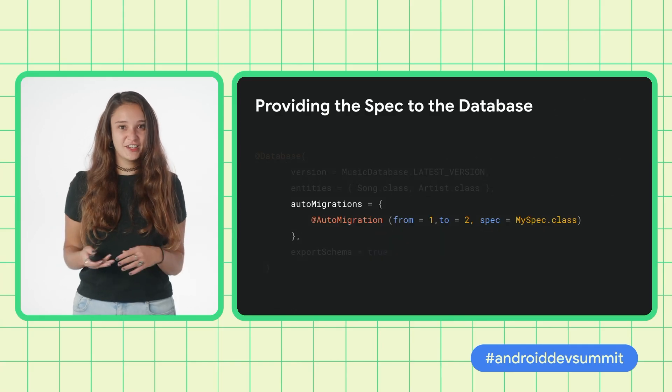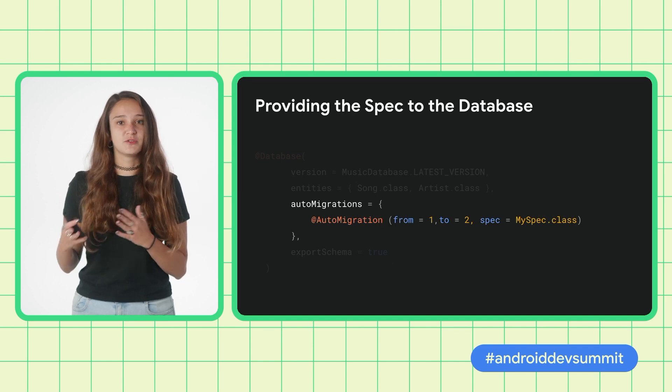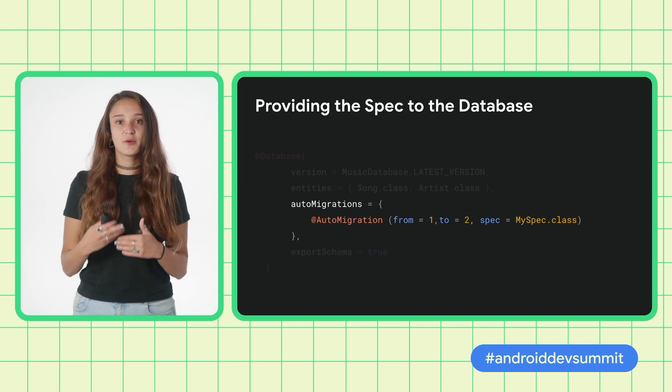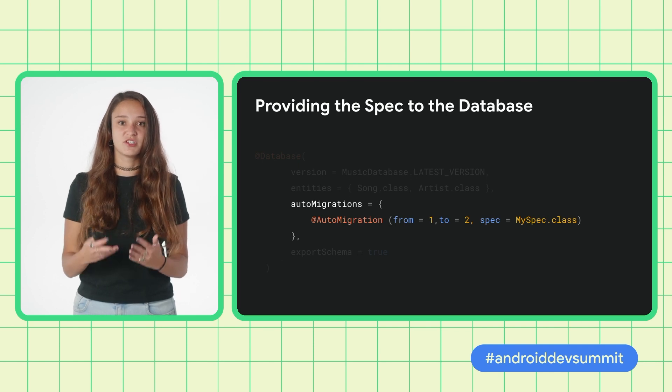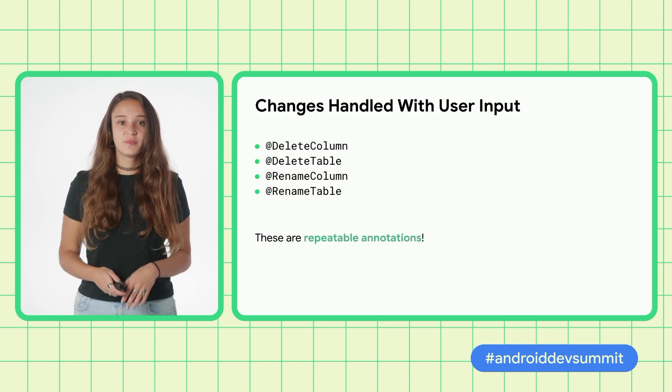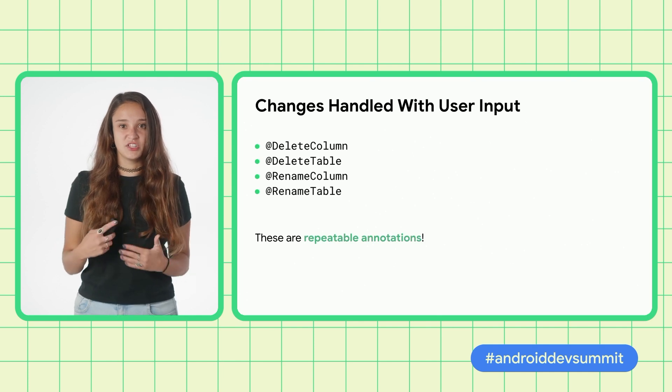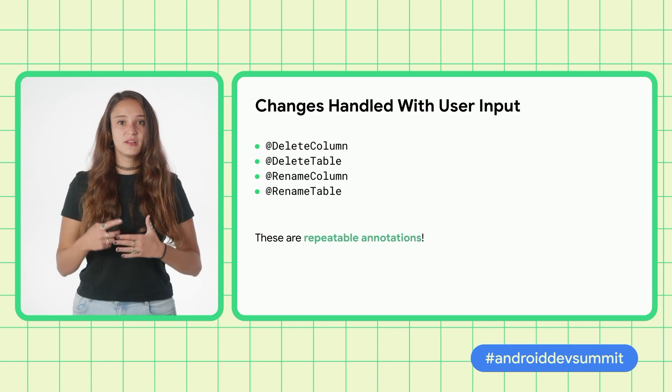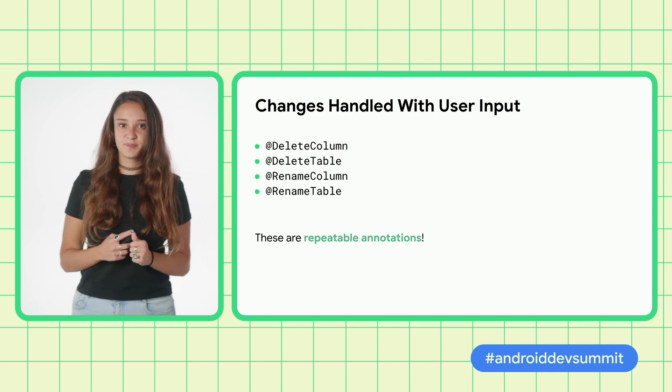Once again, with the two schemas of the versions you want to migrate between provided, the auto migration API will handle the rest by generating and implementing the migrate function for you. Going back to the ambiguous change scenarios that require user input, these are all the available annotations. Even more, if you have multiple changes that require user input within the same migration, you can use repeatable annotations to provide the needed clarifications. All other changes will be handled out of the box without any input needed.